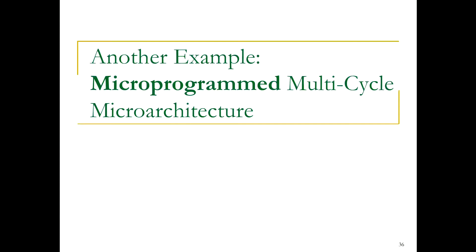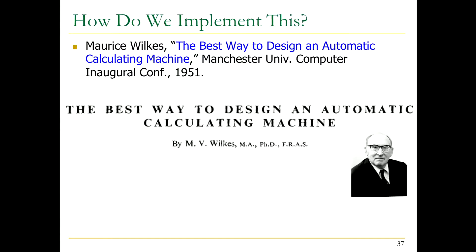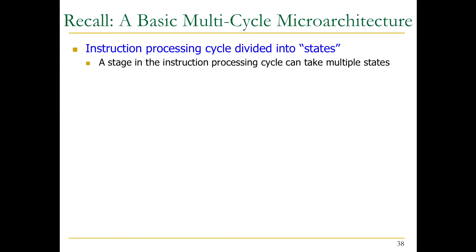We're going to go through another multi-cycle microarchitecture because microprogramming is so powerful and increasingly important to learn. This is one of those examples where you should stretch your thinking about how things are designed — there's no single way, just as there's no single way to design buildings. According to Morris Wilkes, this is the best way. We've divided instruction processing into states and jump from state to state. Control signals control two things: how the data path processes data, and how to generate control signals for the next clock cycle.